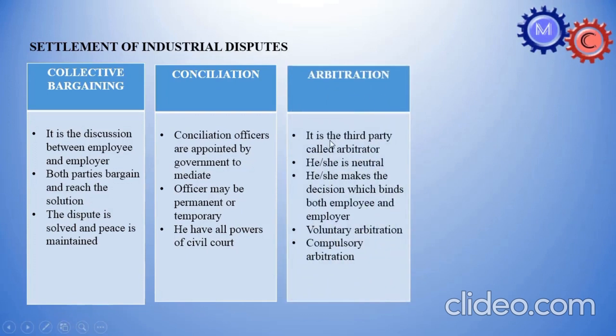Arbitration. It is the third party called arbitrator. One company, employee, employer, third. He or she is neutral. He or she makes the decision which binds both employee and employer. Voluntary arbitration. Compulsory arbitration. Sometimes, if you are neutral in the company, you will be able to use this problem.